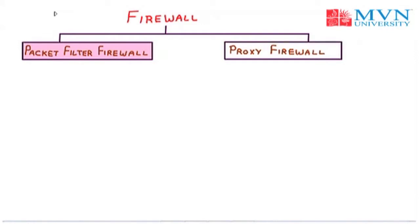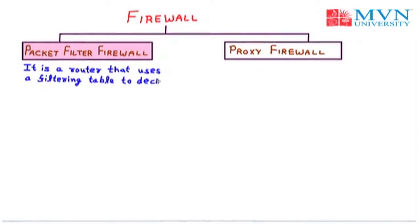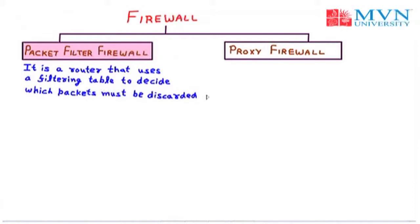Packet filter firewall: it is a router that uses a filtering table to decide which packets must be discarded or which packets must be forwarded. The firewall can be used as a packet filter — it can forward or block packets based on the information in the network layer or the transport layer headers.